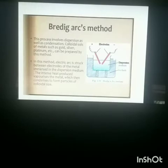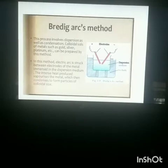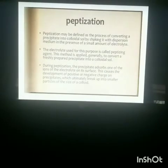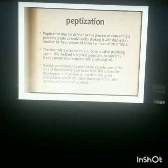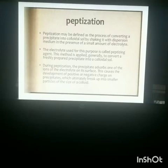The second method is Bredig's arc method, which is considered a condensation method where colloidal sols of metals like gold, silver, and platinum are prepared. Another method is peptization — converting a precipitate into colloidal solution by shaking it with a minimum amount of electrolyte. The electrolyte used here is called the peptizing agent. During this process, the precipitate gets adsorbed on the surface of the electrolyte, which develops a positive or negative charge on the precipitate.